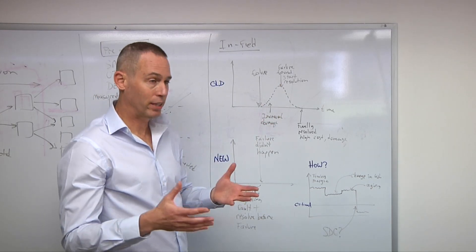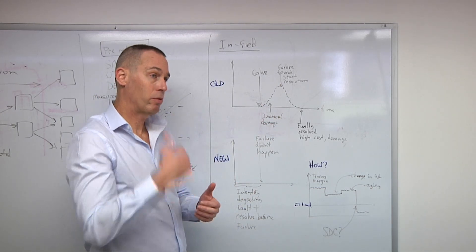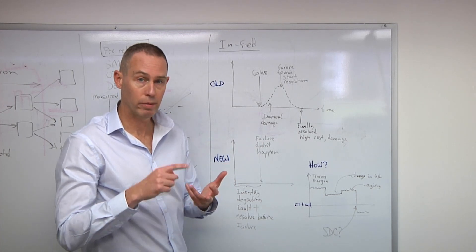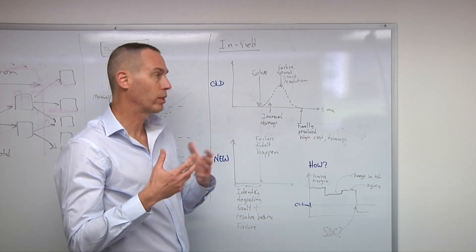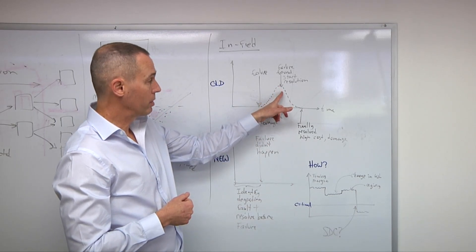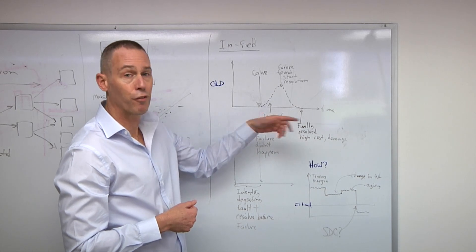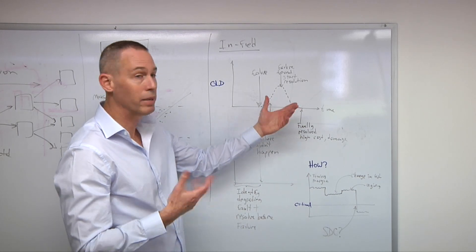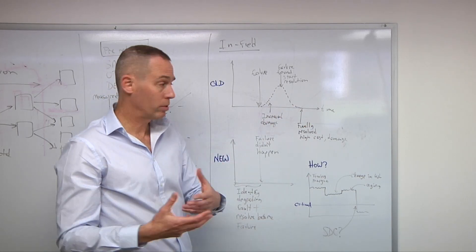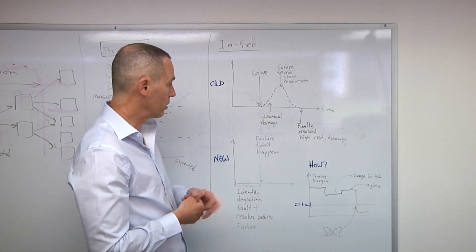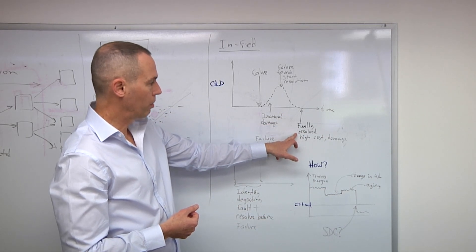Until we actually identify it, if this is where the failure happened, a lot of damage will be happening, depending on what the application is, so that there is increased damage until this point. Eventually, you will identify the failure, but now you have to mitigate it. And if you remember, we spoke about we don't know where it happened in the system. We don't know why. There are many questions that we don't know about what the source of the SDC is. So now comes the long and tedious and expensive process of finding where the source is and mitigating it. Many times, it will be costly, time cost, money cost. But eventually, finally, when we resolve the problem, very high cost and damage to the system.